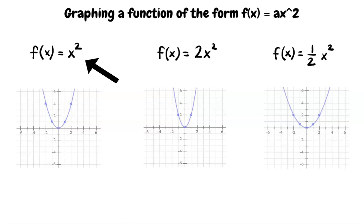The parent function is f(x) = x² when the leading coefficient a equals 1. Changing the coefficient of x² to 2, the parabola thins. This happens because the values of y are increasing 2 times as fast as when a equals 1.